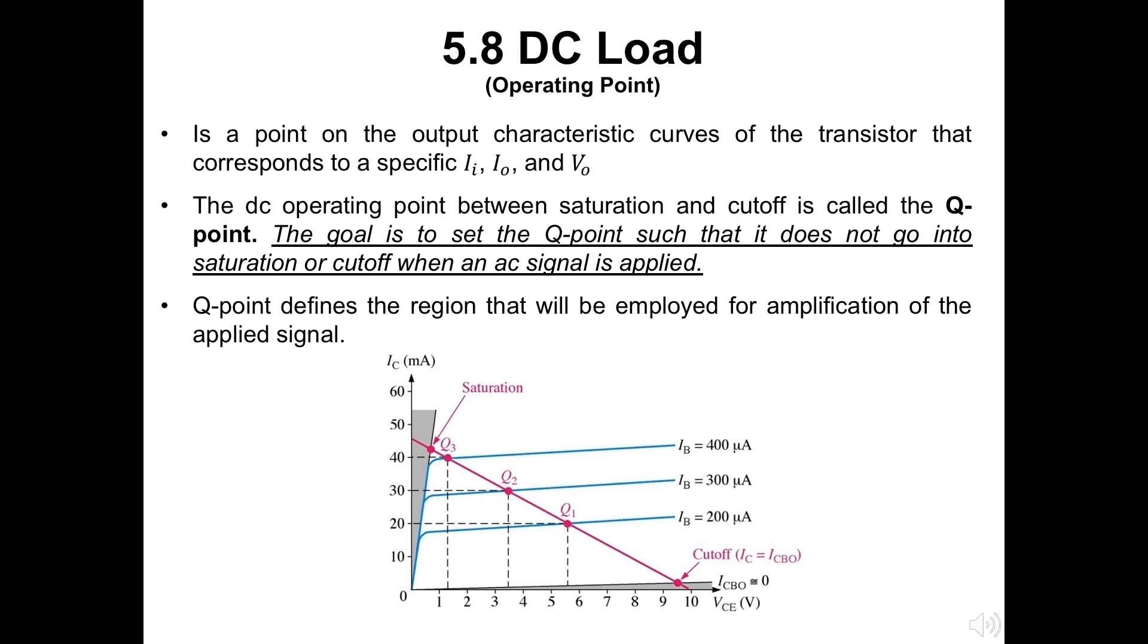In Chapter 5, we also will have the Q point. The DC operating point between saturation and cutoff is called the Q point. The goal is to set the Q point such that it does not go into saturation or cutoff when an AC signal is applied. Q point defines the region that will be employed for amplification of the applied signal.